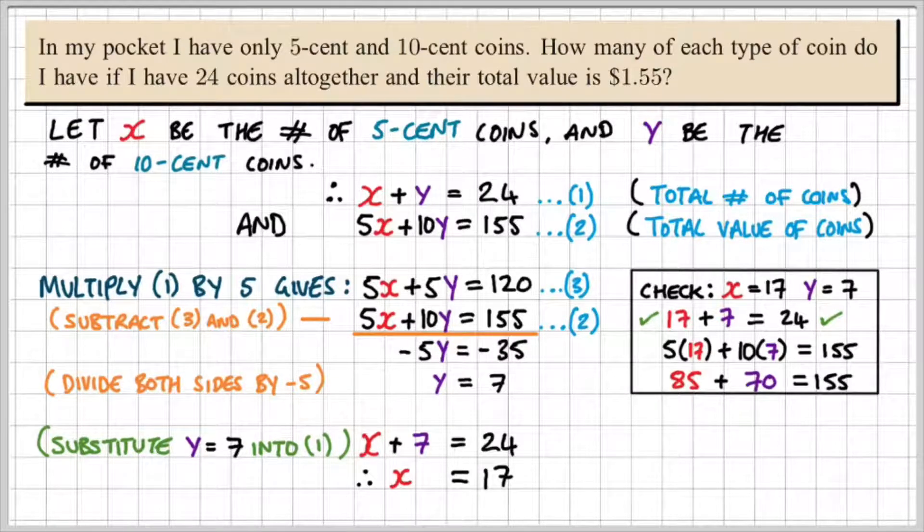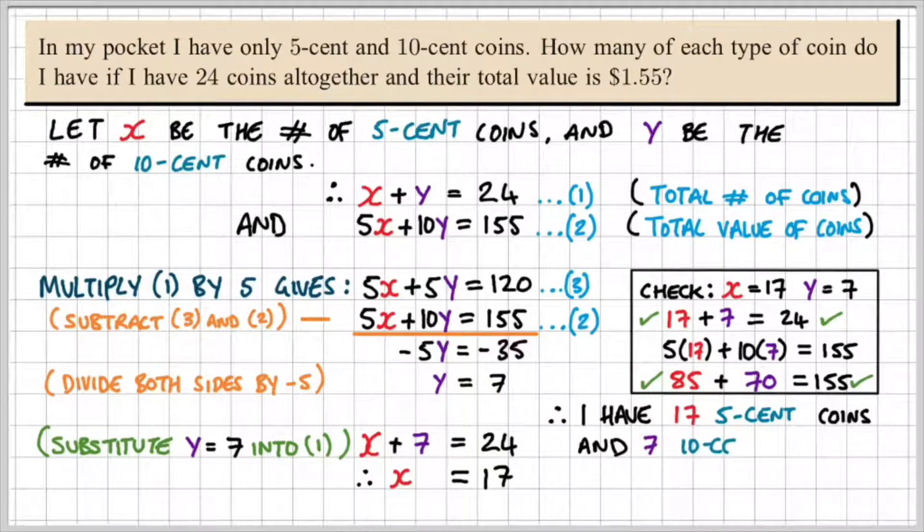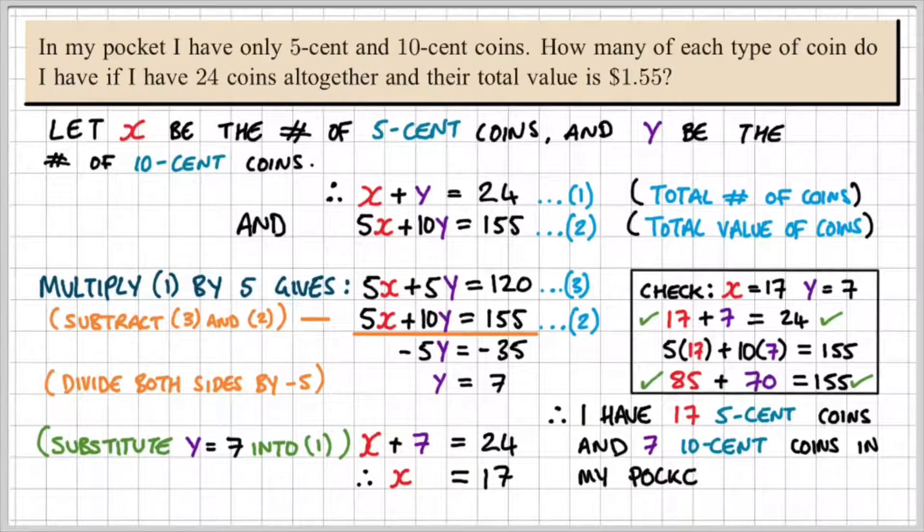That's 85 plus 70 is equal to 155. Since 85 plus 70 is equal to 155, I know that the second equation is balanced. And therefore, I can say I have 17 5-cent coins and 7 10-cent coins in my pocket.